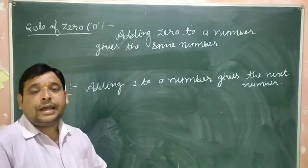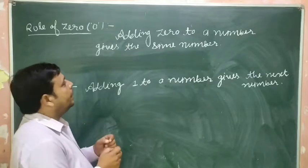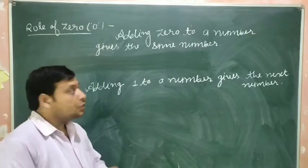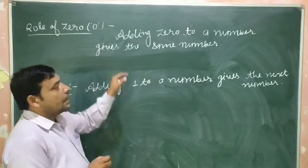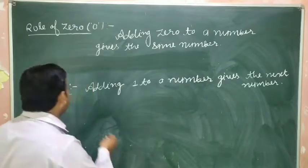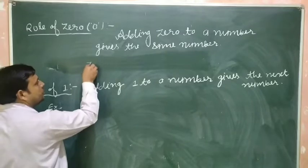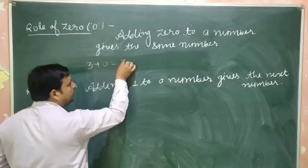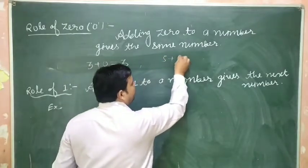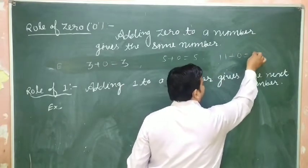Students, role of zero in addition: when we add zero to any number, it gives the same number. For example, three plus zero equals three. Another example: five plus zero equals five. Another example: eleven plus zero equals eleven.